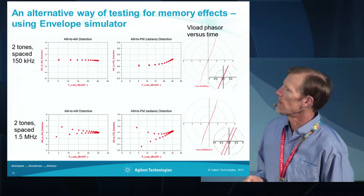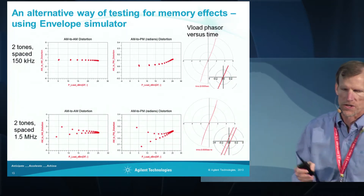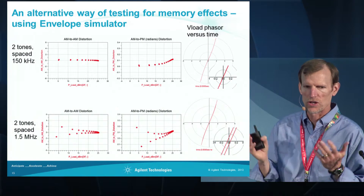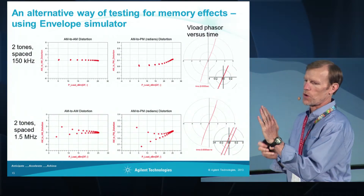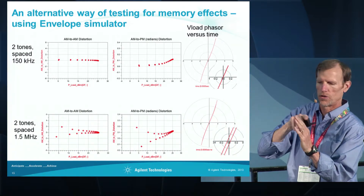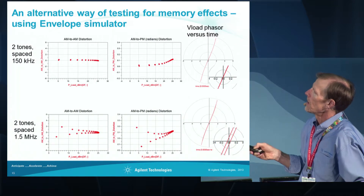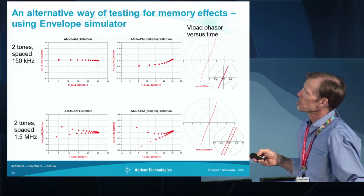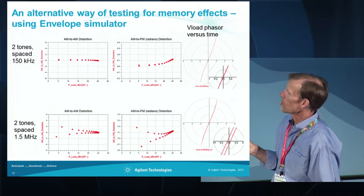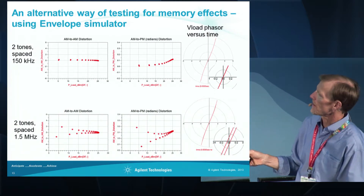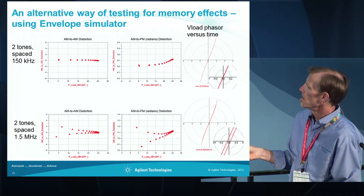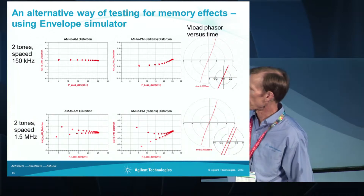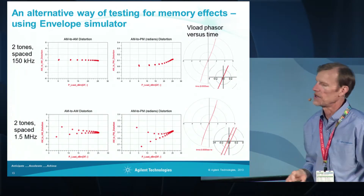This is another method of looking at memory effects. If you have a sinusoid and apply cosine amplitude modulation to it, you're basically sweeping the amplitude of the signal up and down and changing its phase. If you have a slow rate of modulation, you don't have much distortion or spreading. But if you have a faster rate of modulation, we see hysteresis occurring and spreading in the lower plots, which are an indication of memory effects.